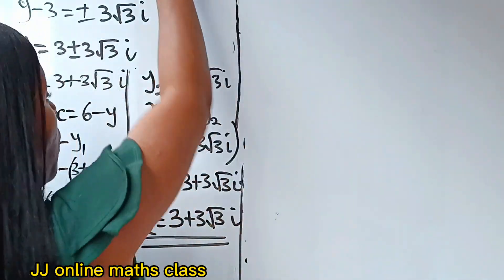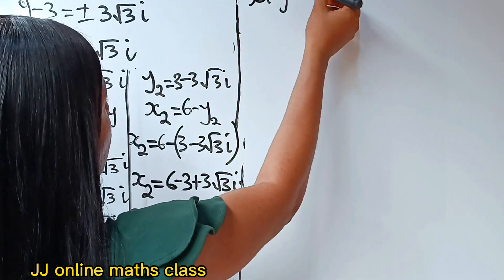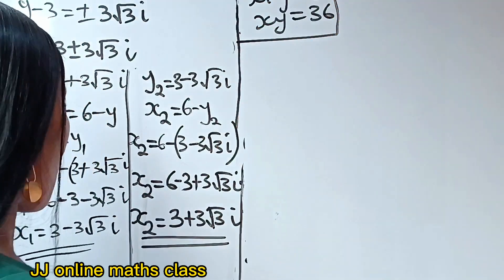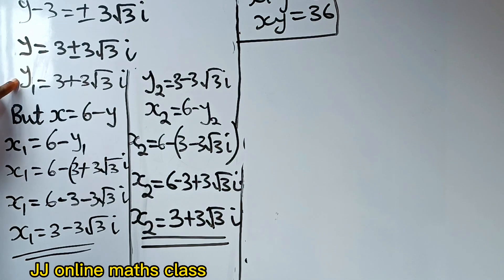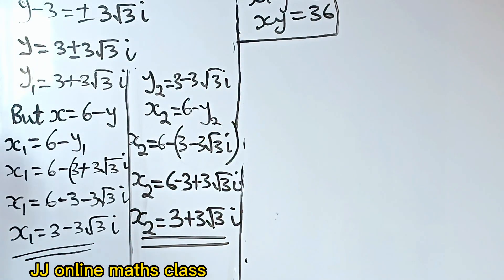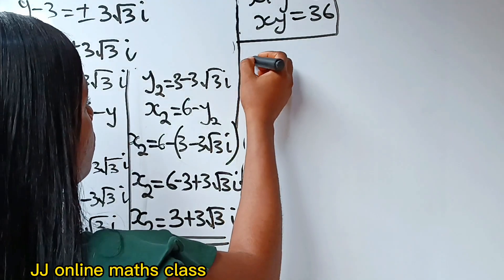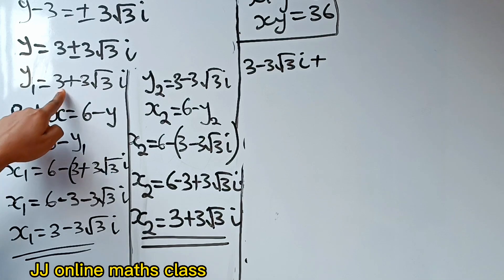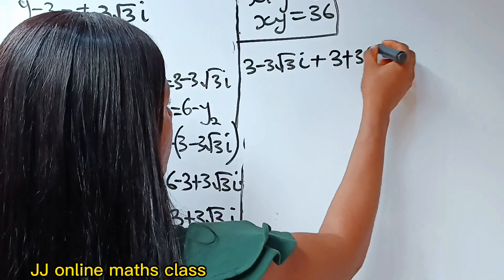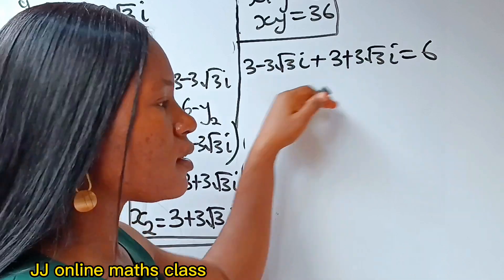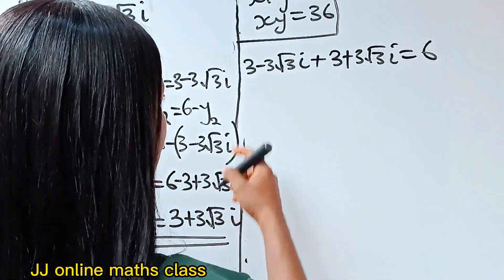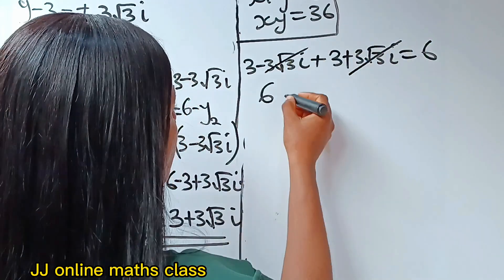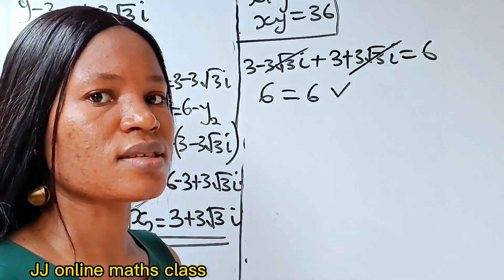Now let's substitute these values into the main equations to verify. Using x₁ and y₁ in equation 1: (3 minus 3 root 3 i) plus (3 plus 3 root 3 i). We have 3 plus 3 equals 6, and minus 3 root 3 i plus 3 root 3 i equals 0. So we get 6 equals 6. This confirms it is a solution.